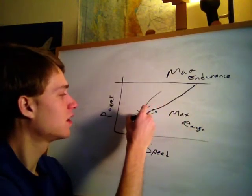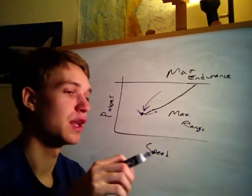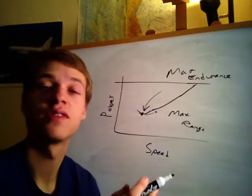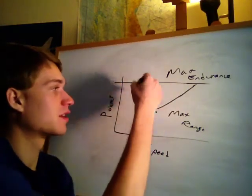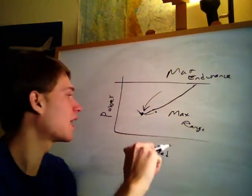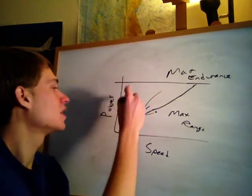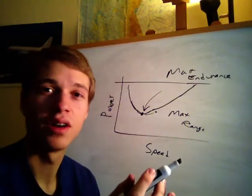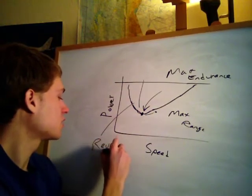Going back the other way on the power curve: what happens if you try to fly slower than the minimum power airspeed while still maintaining altitude? You start getting more and more drag, so you have to push in the throttle to maintain altitude. You're using more and more power. And this gets really weird — in order to fly slower, you have to use more power. We call this the region of reversed command, because it's backwards.